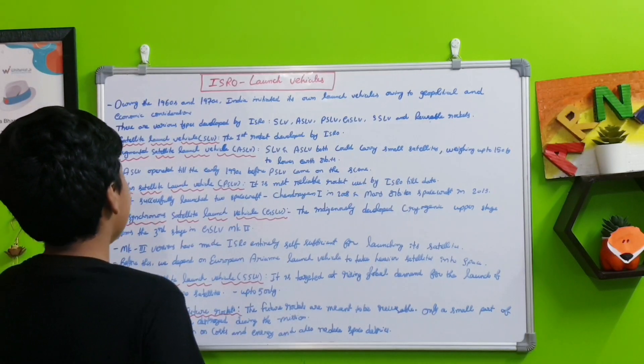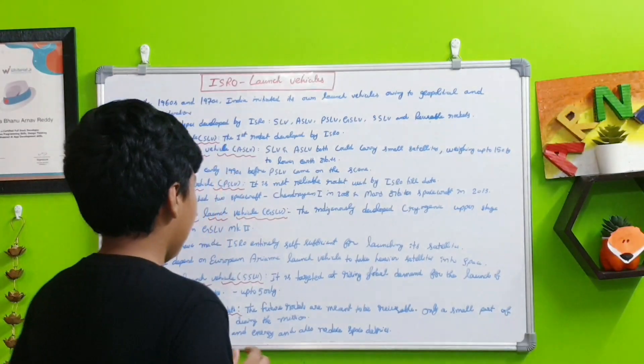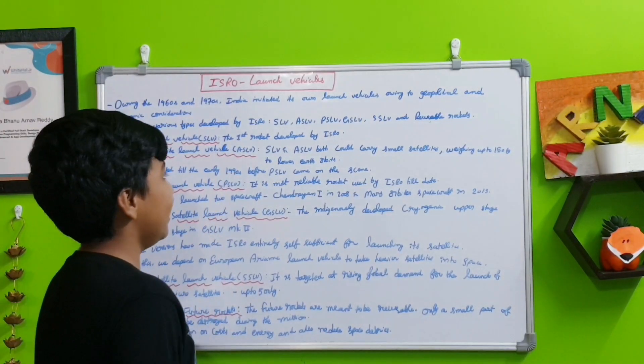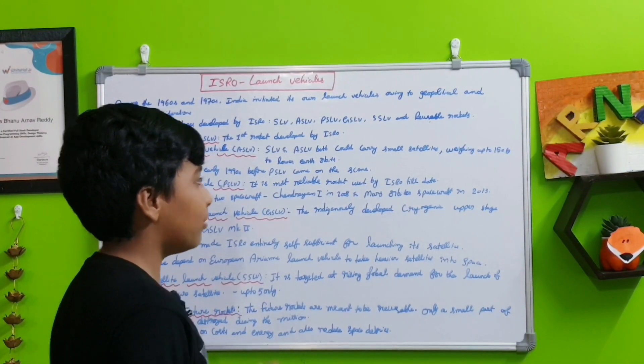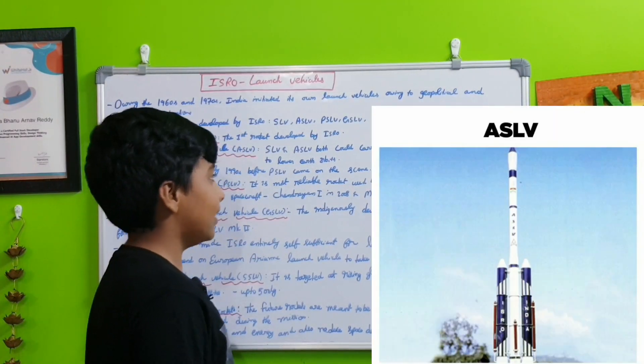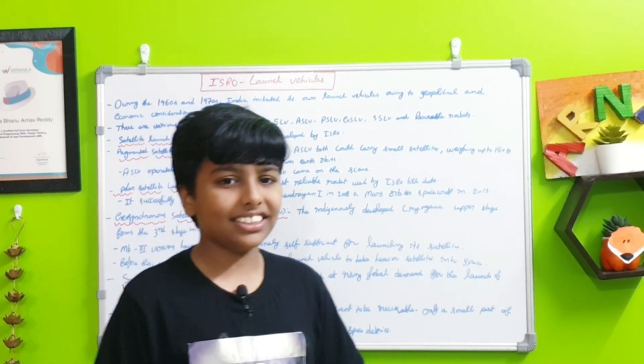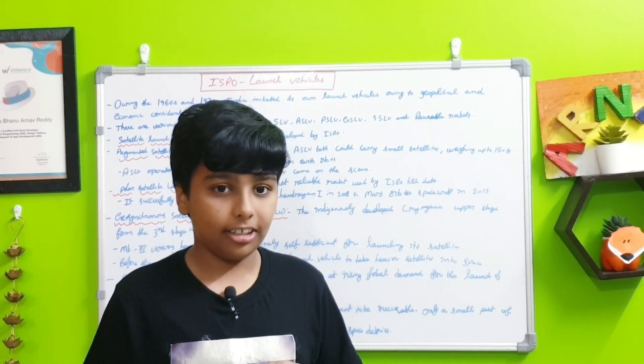Next, the Augmented Satellite Launch Vehicle or ASLV. The SLV and ASLV both could carry small satellites weighing up to 150 kilograms to lower earth orbits.